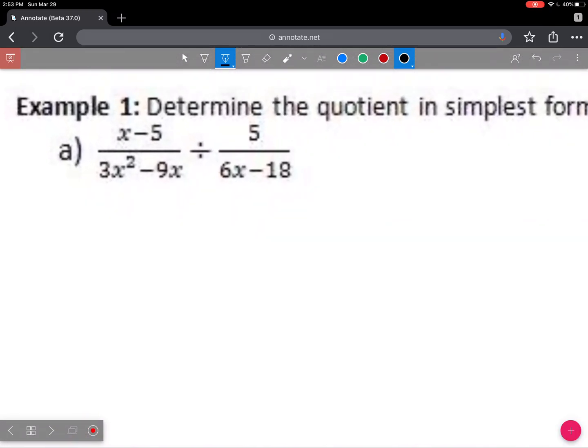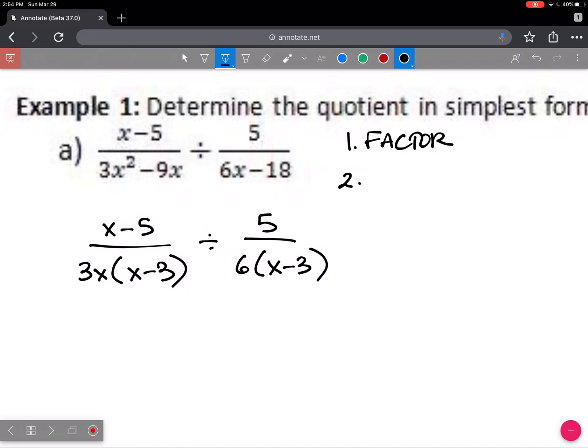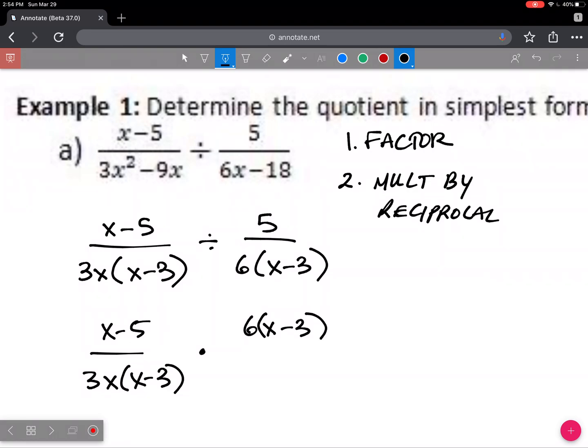Looks like I need to factor the bottom left and the bottom right. I'm going to get x minus 5 over, taking out a 3x, I'm left with x minus 3, divide, taking out a 6, I'm left with x minus 3. So that was the first step. Factor any binomials. Now, the second step, we're going to change the division sign and multiply by the reciprocal. Multiply by the reciprocal. We've got x minus 5 over 3x, x minus 3, multiplied by 6x minus 3 over 5.